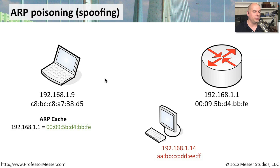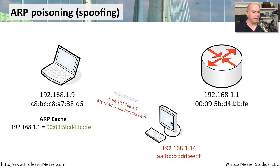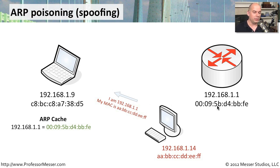He wants to become the router, making sure all traffic from the laptop flows through him first before it ever reaches the router. So he crafts a packet pretending it's coming from 192.168.1.1 — he spoofs the router — and says: I'm sorry, my MAC address is now different. It's no longer 00:09:5B... it's now the bad guy's MAC address: AA:BB:CC:DD:EE:FF.